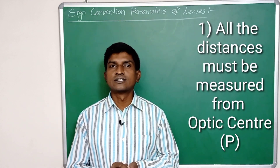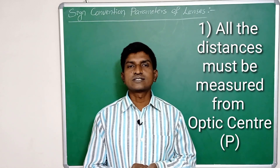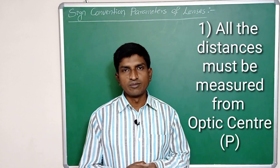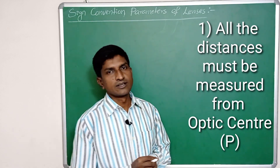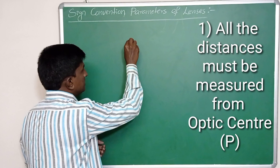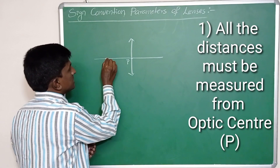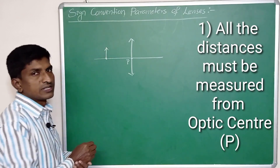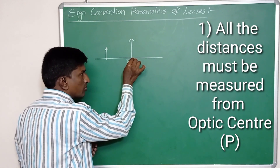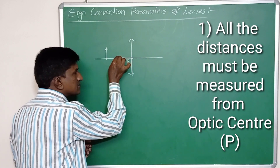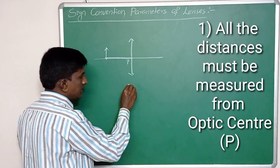The first sign convention is that all distances must be measured from the optical center. Before measuring distances of objects or images, we need to start from the optical center. For example, this is the convex lens and here is the optical center. An object is placed here, and the distance of the object from the lens must be measured starting from the optical center.